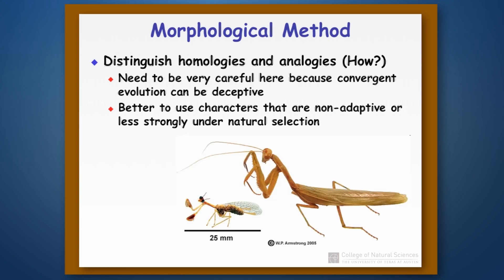Here's an interesting example. Over on the right, you see a praying mantis. On the left, that smaller organism that looks an awful lot like a praying mantis is actually a species of fly that has been selected under similar circumstances, and it ends up looking very much like a praying mantis even though it's not.